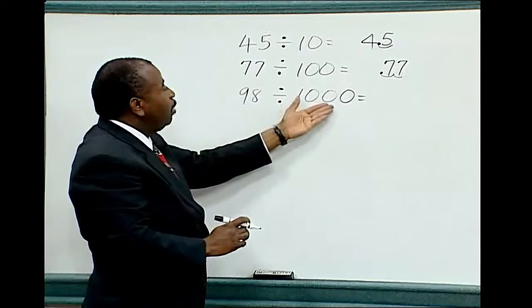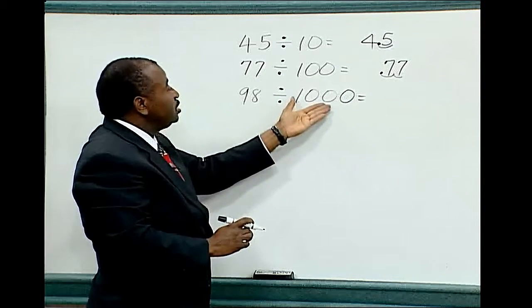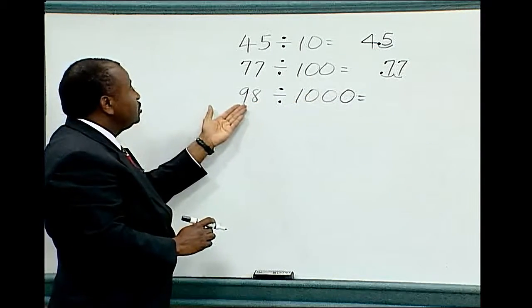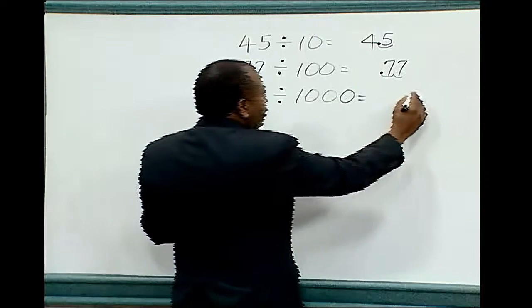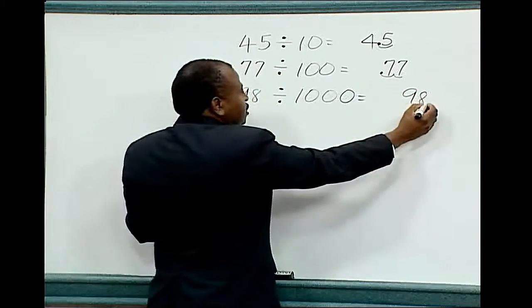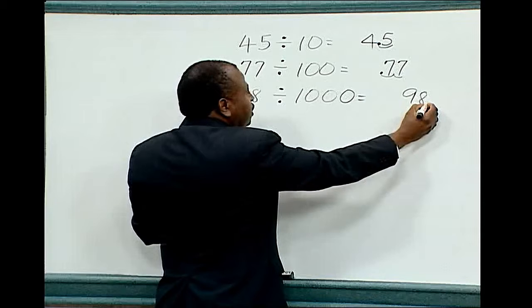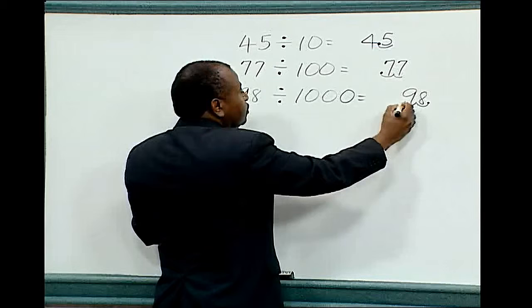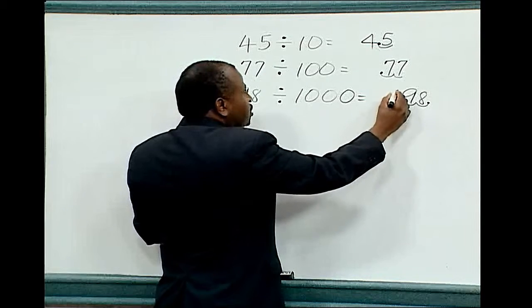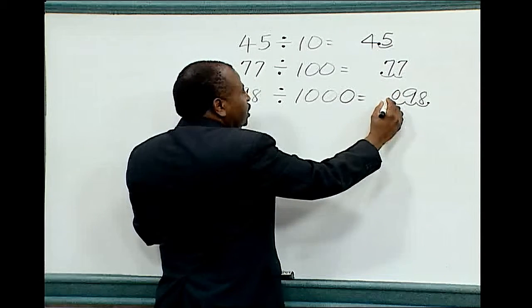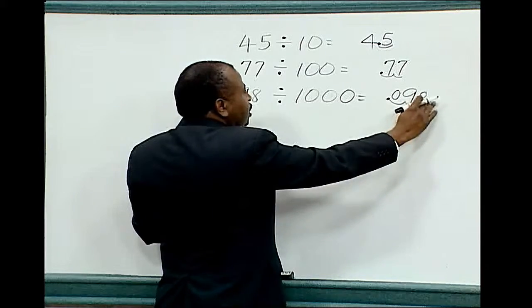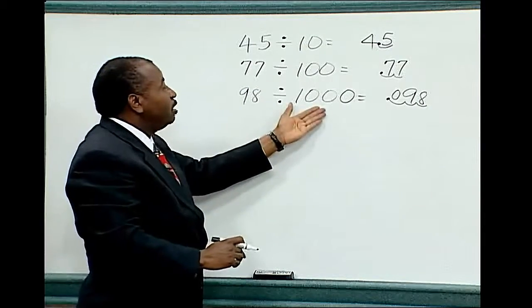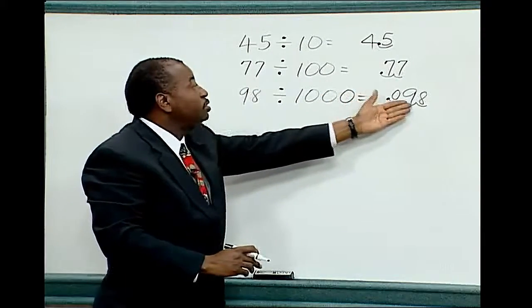Ninety-eight divided by one thousand. The one thousand contains three zeros. Therefore, the decimal point must be moved three places to the left. Ninety-eight — the decimal point is understood to be behind the eight. Move the decimal point three places to the left: one, two, three. We must add a zero to fill in the space between the decimal point and the nine. Erase the original decimal point. Therefore, ninety-eight divided by one thousand is equal to point zero nine eight.